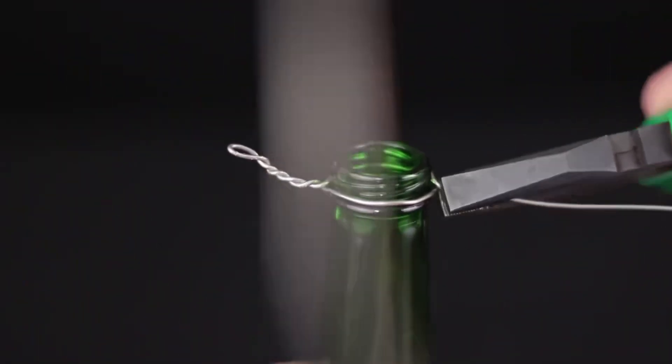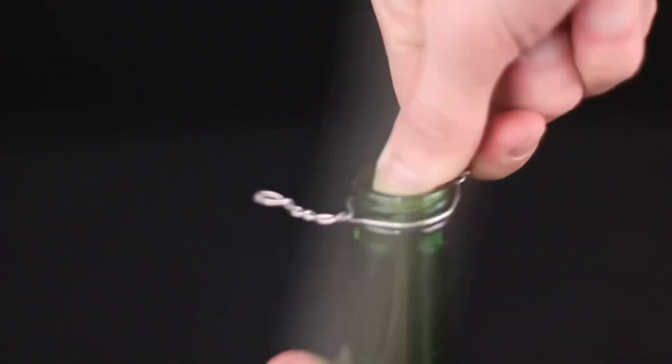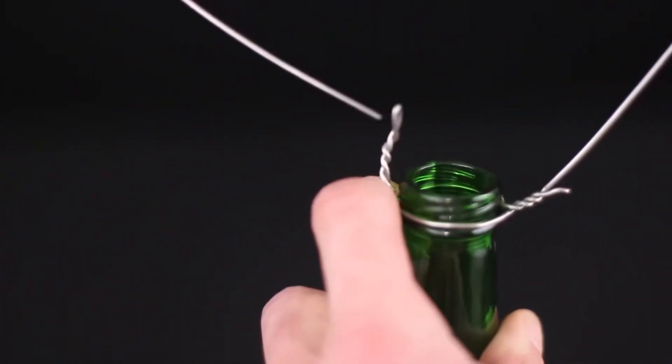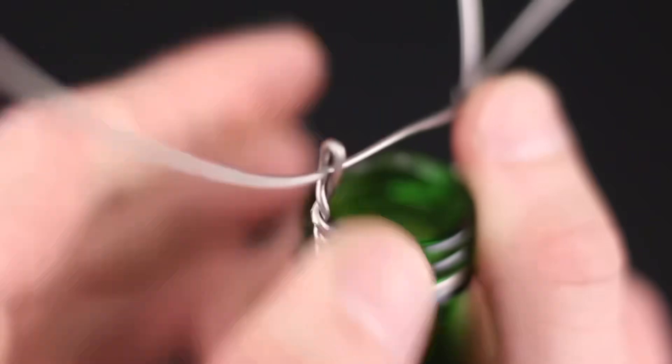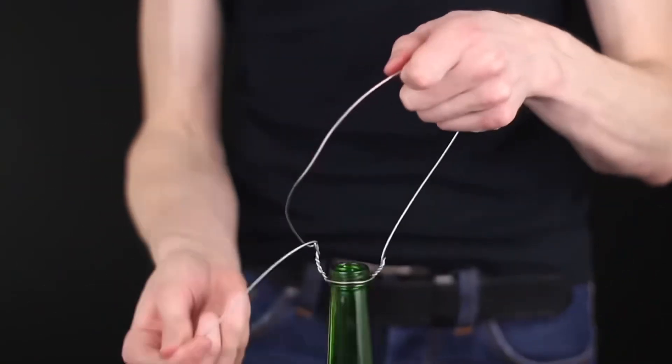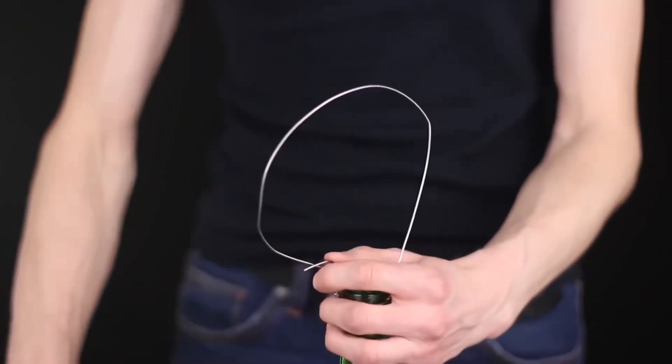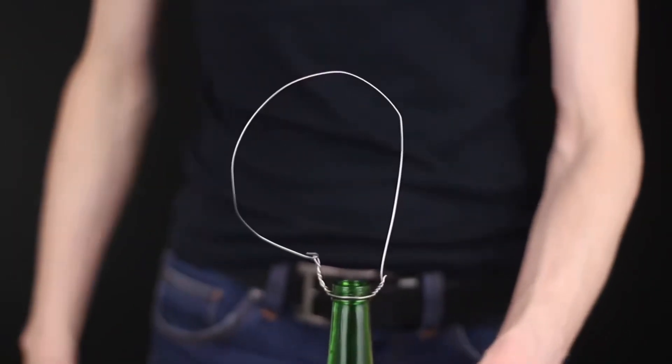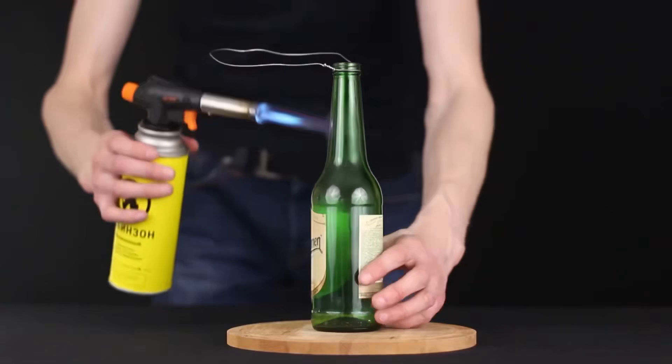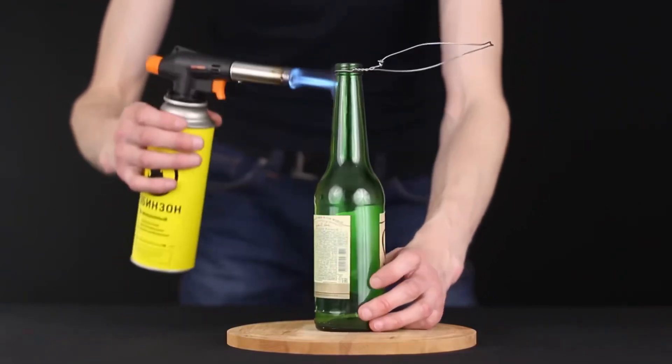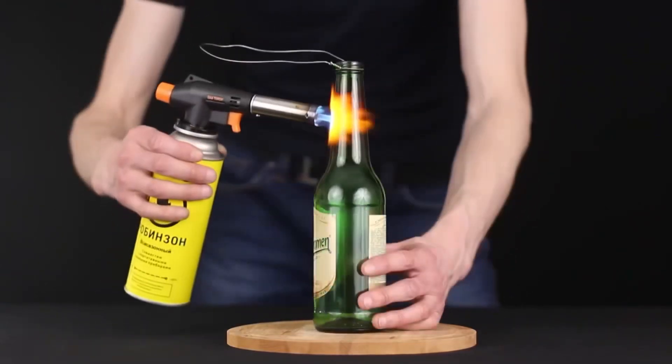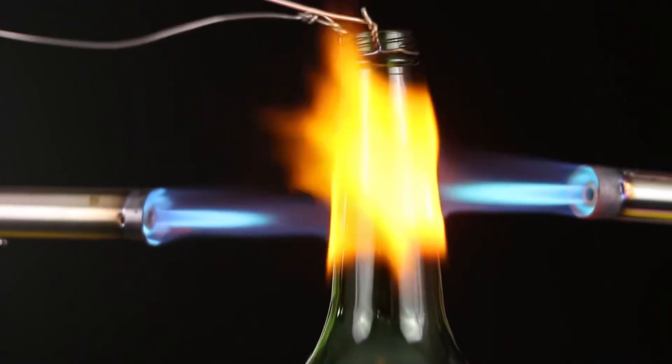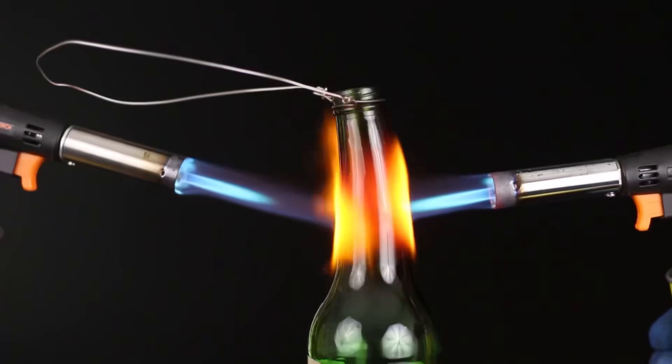We wrap the neck of the bottle with wire and twist it. And pull the free end into a resulting loop. Cut off the excess and twist it for reliability. That turns out to be such a handle. Now heat the bottle with the burner until the glass gets hot and becomes soft and malleable.